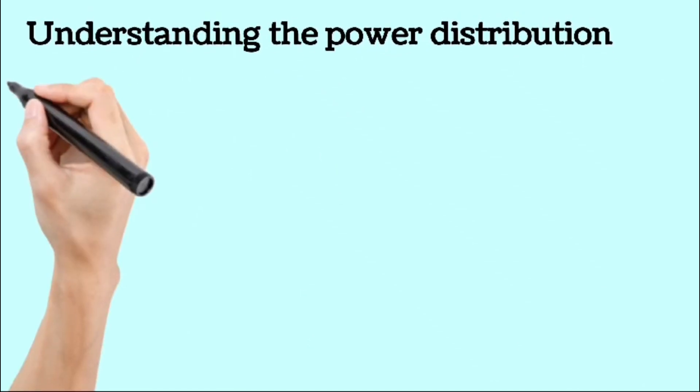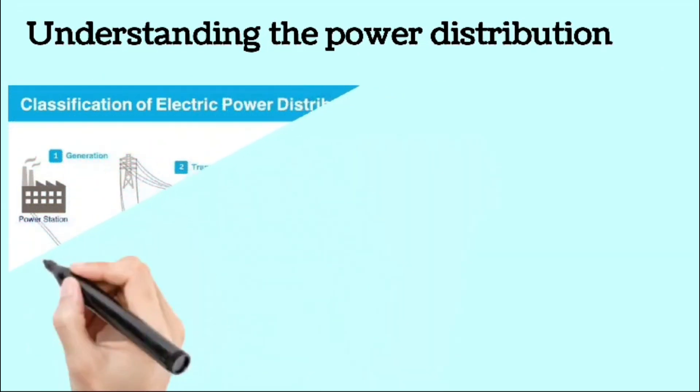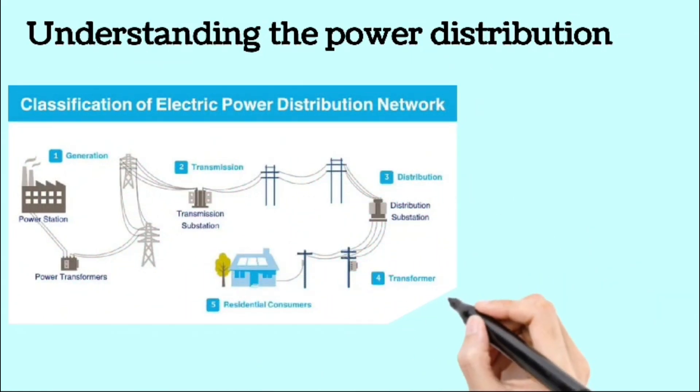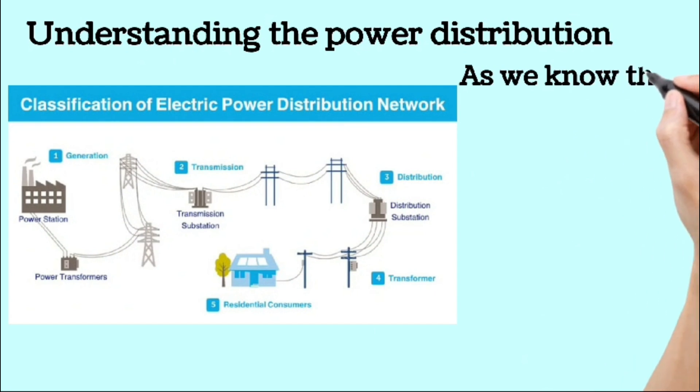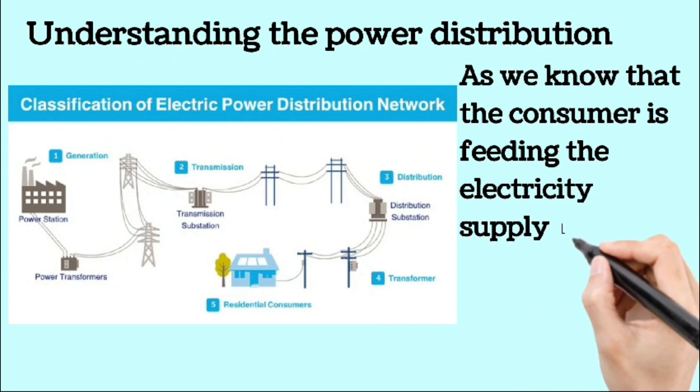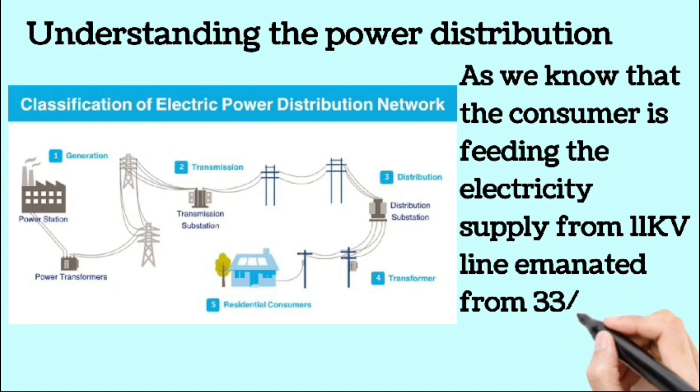As you are aware and shown in picture, power is generated at the generating station and then transferred to various consumer points through transmission lines, substations and transformers. The 11 KV line originates from a 33/11 KV substation and supplies power to the consumers. This setup forms the basis of the power supply system.